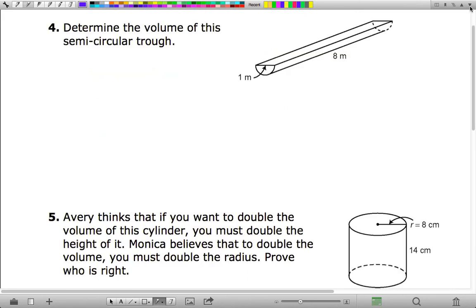Now just going on to the next page, we're looking to find the volume of the semicircular trough. So it's half a cylinder. So we're going to do a half times approximately 3.14, and the radius is half a meter, and the height of this trough is 8. Now if you work that out, you get 3.14 cubic meters.